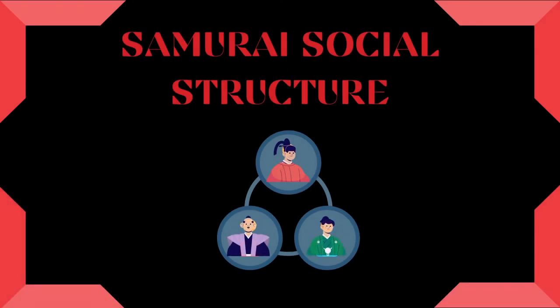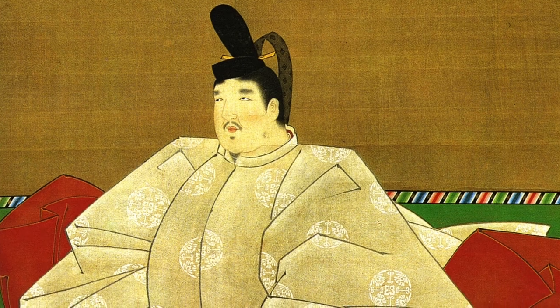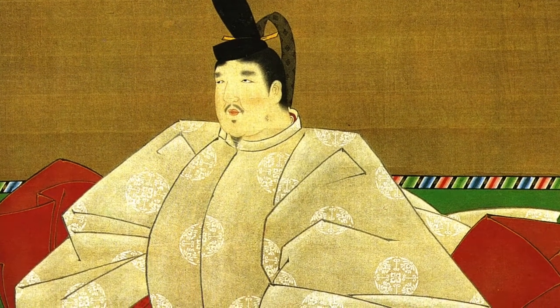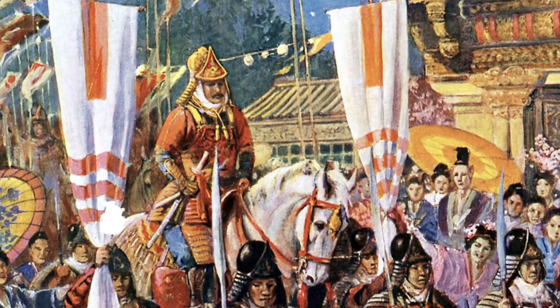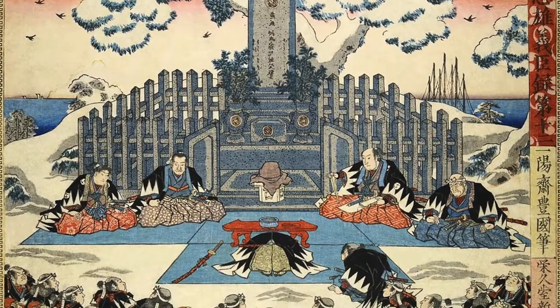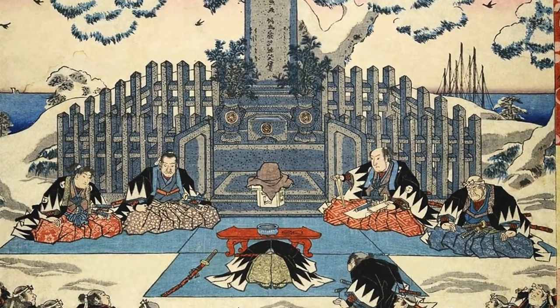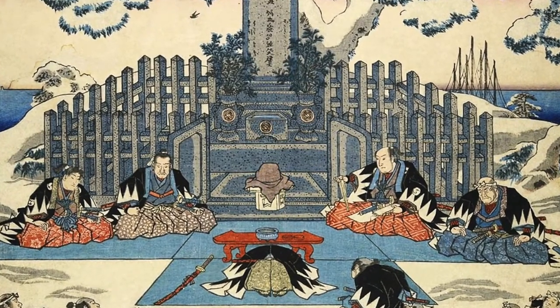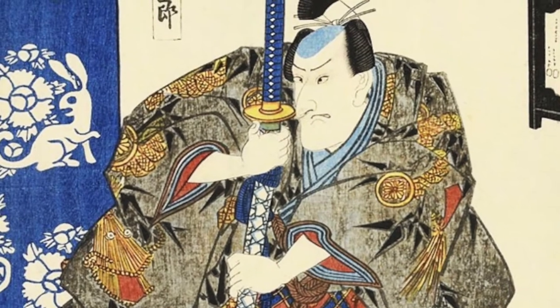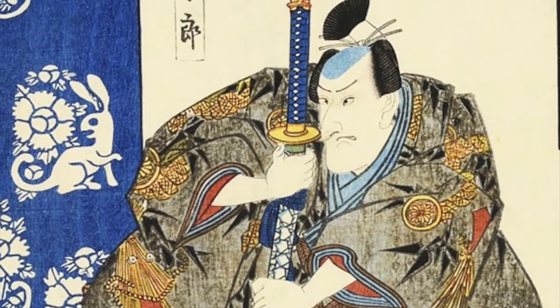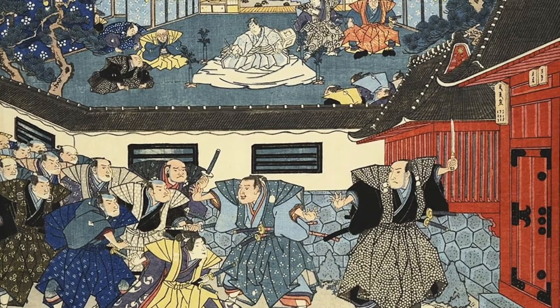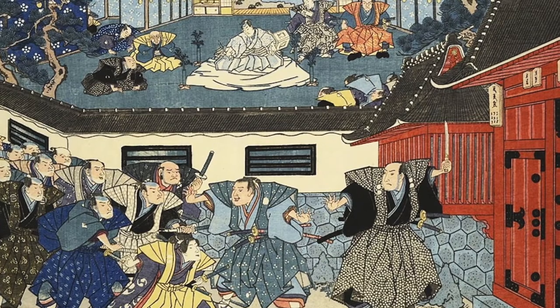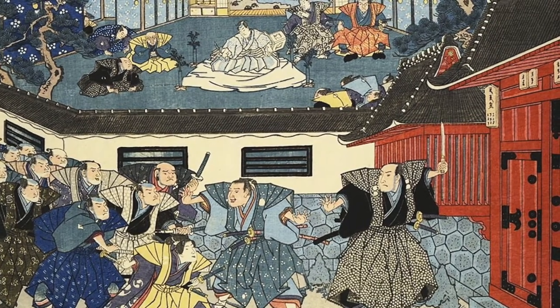The next topic is samurai social structure. At the top of the social hierarchy in Japanese society was the emperor. However, during the periods of military rule, a leader called a shogun became the de facto ruler of Japan. Under the shogun were many daimyos, who were like feudal lords in medieval Europe. The next class under the daimyos were samurai. Each rank awarded the lower ranks with land, money, and administrative positions. During different periods of time, the centralized power of the shogun strengthened and weakened depending on politics within Japan.